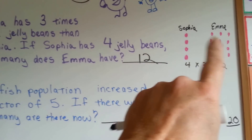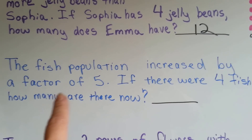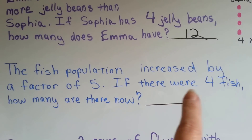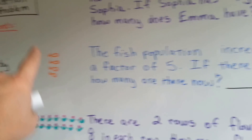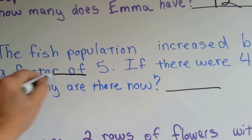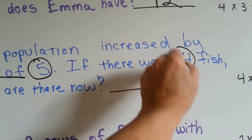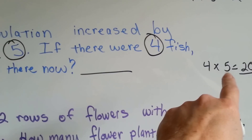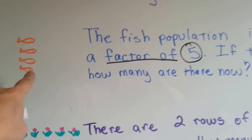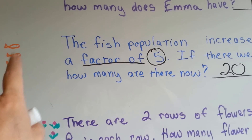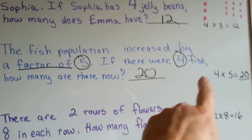Sometimes, if you draw a picture for the word problem, it'll help you. Let's try this one. The fish population increased by a factor of five. If there were four fish, how many are there now? Factor of is a clue word for a multiplication word problem. It tells us to multiply the five and the four. Four times five is twenty.